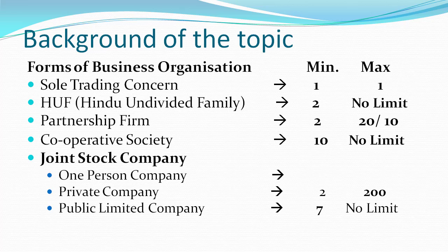The second form of business organization is the Hindu Undivided Family business, or HUF. For HUF, it requires a minimum of two persons. One person is called the Karta, and the other members are called co-parceners. There is no specific maximum number of persons prescribed in the HUF law.